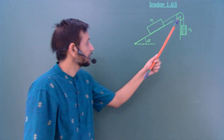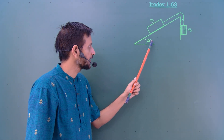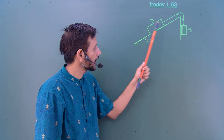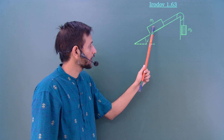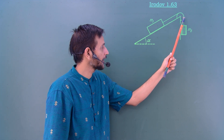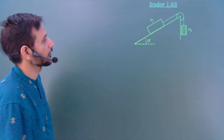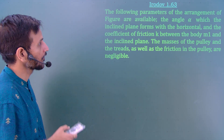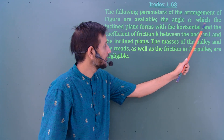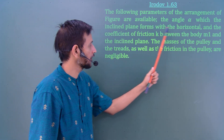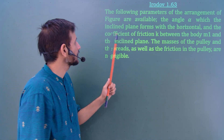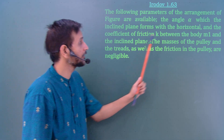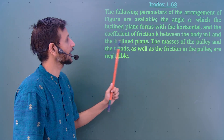This is the figure: an inclined plane of angle of inclination alpha with a pulley. The mass of the first block is m1 and the mass of the second block is m2. This block is connected by a thread going over the pulley and connected with block m2. The angle alpha is what the inclined plane forms with the horizontal, and there is a coefficient of friction k between body m1 and the inclined plane.